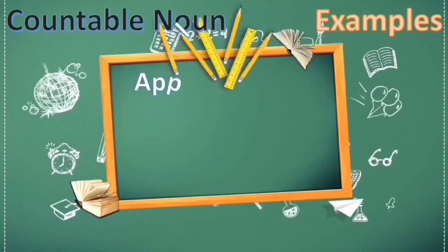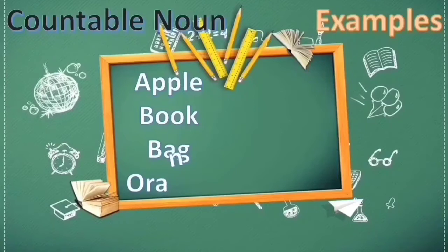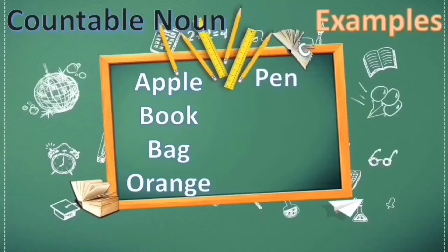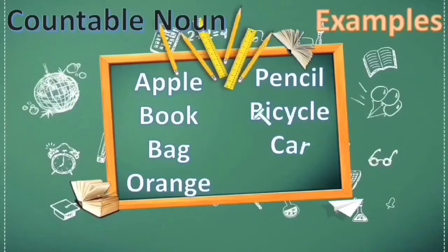Contoh kata benda yang bisa dihitung satuan adalah: book, bag, orange, pencil, bicycle, car, and train.